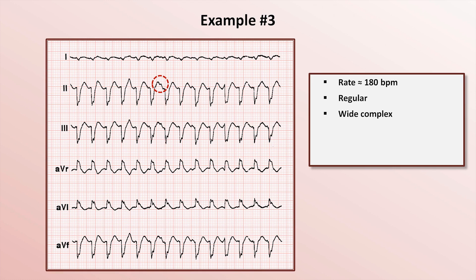This corresponds to similar bumps in leads 3, AVF, and even AVR. If you saw this in just a single lead, you might speculate it was artifact of no consequence. However, seeing it in 4 different leads simultaneously strongly suggests it's something real — and that something real is a dissociated P-wave.